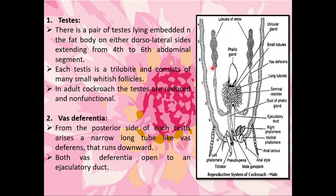The second organ of the reproductive system is the vas deferentia. From the posterior side of each testes arises a narrow long tube-like vas deferens that runs downward. Both the vas deferentia open into an ejaculatory duct. You can see the opening of both vas deferentia into the ejaculatory duct in the diagram.